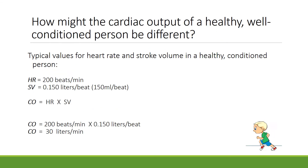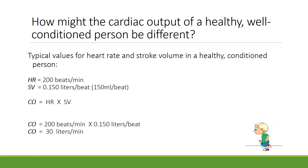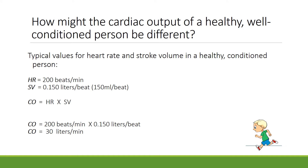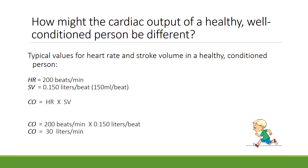How might the cardiac output of a healthy, well-conditioned person be different? Typical values for heart rate and stroke volume in a healthy, conditioned person might be 200 beats a minute and 0.150 liters per beat. Plugging that into the formula, cardiac output equals 200 beats per minute times 0.150 liters per beat, and that's 30 liters per minute.